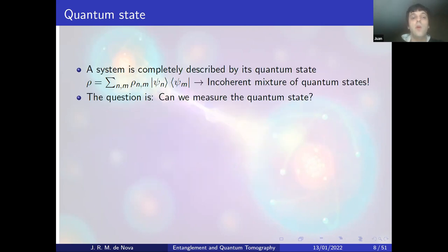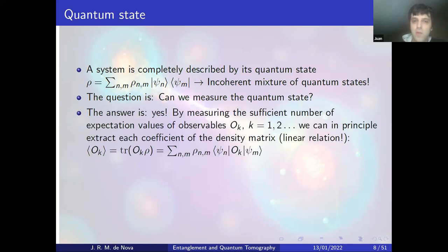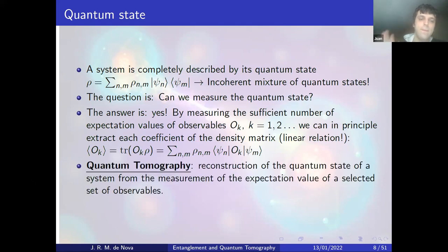Can we measure this quantum state? Yes. If we measure a sufficient number of expectation values, we can in principle extract each coefficient of the density matrix — now a linear relation. This is the basis of quantum tomography: the reconstruction of a quantum system from the measurement of expectation values of a selected set of observables.